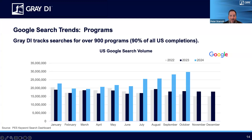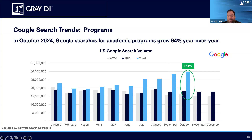We track Google search volumes for over 900 programs, which covers 90% of all completions in the United States. In these charts we've got three years of data shown for each month of the year. The middle bars — darkest — represent 2023, which is what we're comparing to year over year. Light blue bars show 2024 and very light gray shows 2022. Looking at this past month — the most complete month we now have — Google search volumes are up 64% year over year. This continues a trend we've seen in the past few months where, for whatever reason, Google search volumes are much higher compared to the same four months in 2023.